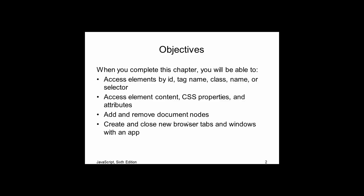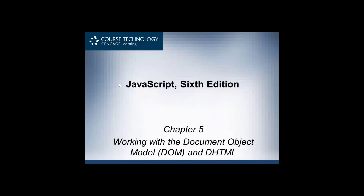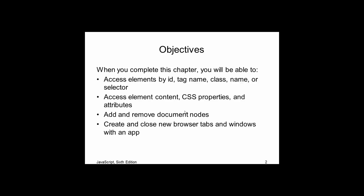Hey everyone, we are moving on to chapter 5 of our JavaScript textbook. This is the 6th edition, chapter 5, working with the document object model in dynamic HTML — DHTML. In this video we're going to cover the first half of the lecture, and some of this will be a little bit of a review.